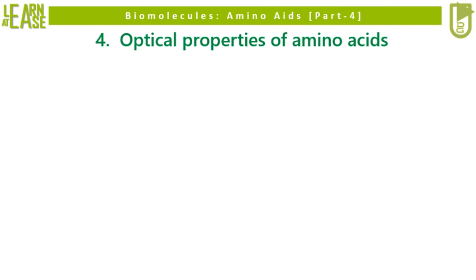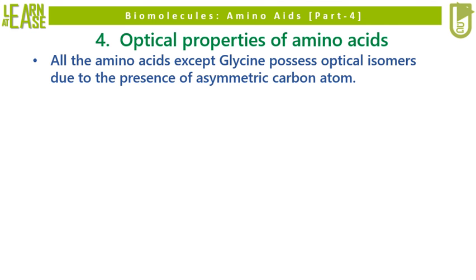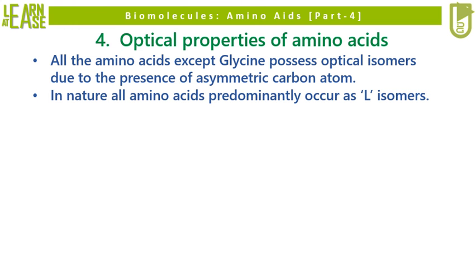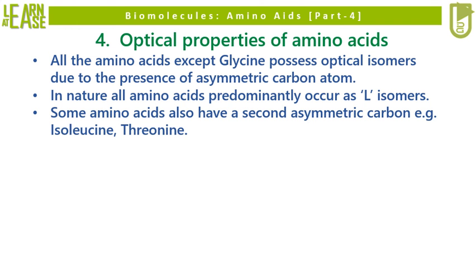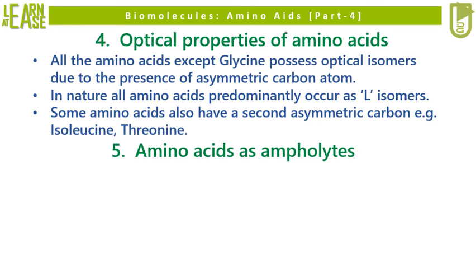The fourth property is optical properties of amino acids. All amino acids except glycine possess optical isomers due to the presence of an asymmetric carbon atom. In nature, all amino acids predominantly occur as L-isomers. Some amino acids also have a second asymmetric carbon — examples are isoleucine and threonine.